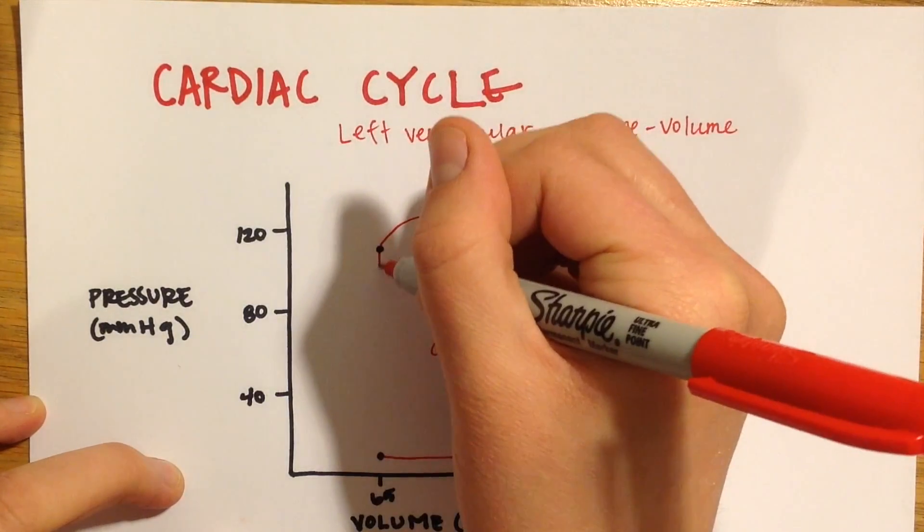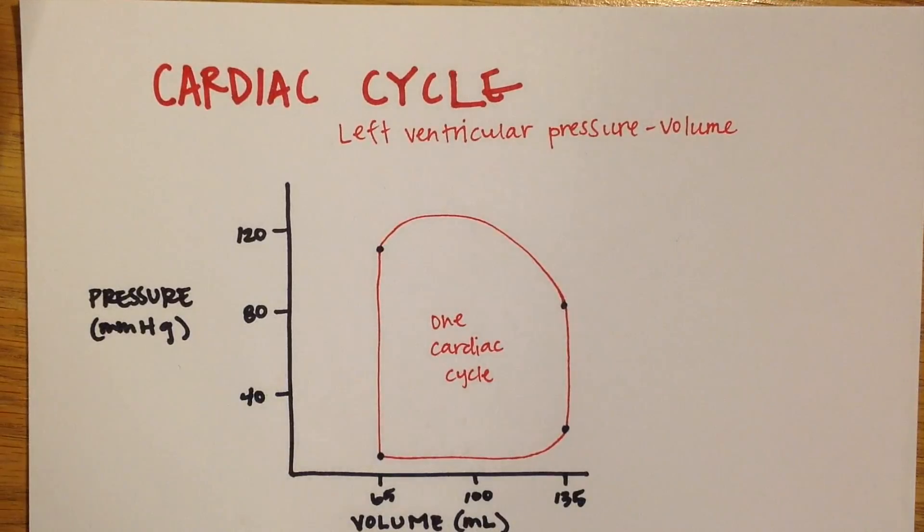Lastly, the ventricles relax and pressure in the ventricles falls, so blood falls back into the cusps of the semilunar valves and pushes them closed.